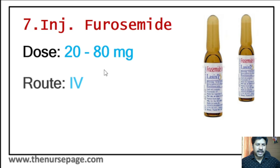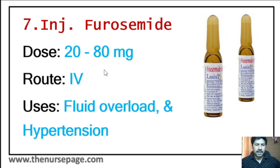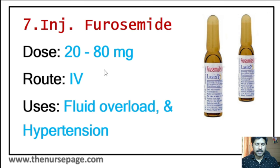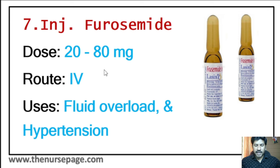Seventh injection is furosemide, commonly known as Lasix. Common dose is 20 to 80 milligram. Route is intravenous. Main uses or indications are fluid overload and hypertension — it removes extra fluid, reduces blood pressure, and relieves fluid overload. It is a diuretic.